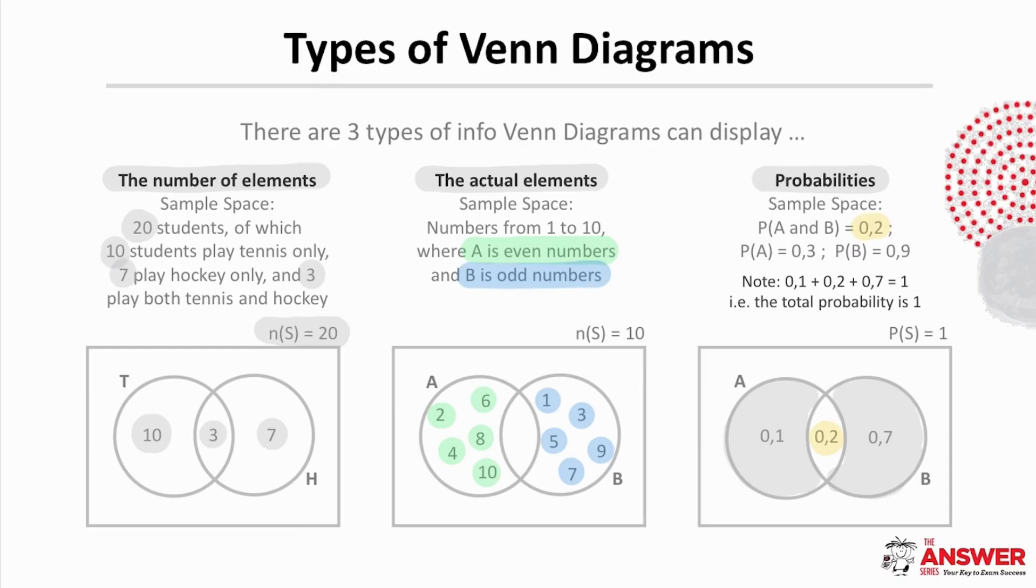Note that for this example 0.1 plus 0.2 plus 0.7 equals 1 and this means everything in this sample space is in A and B.